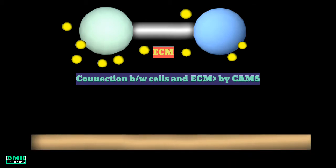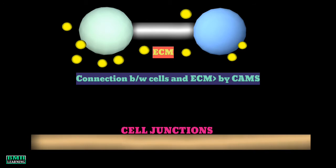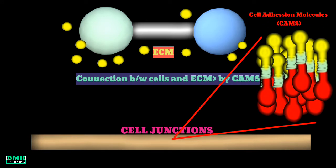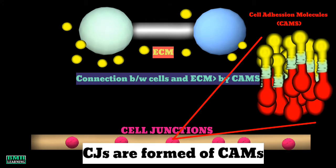Consider the cell membrane of a cell. On the surface of the cell membrane there are numerous discrete patches or spots which we call cell junctions. If we zoom into one of these structures, we find it is actually a bunch formed of clusters of other molecules. These molecules are what we call cell adhesion molecules. So informally, cell junctions are formed of cell adhesion molecules.